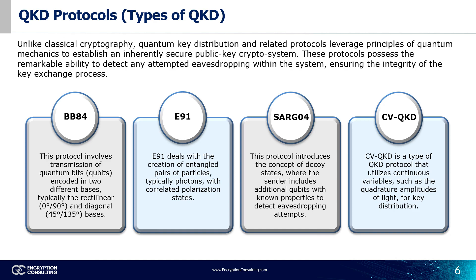Continuous Variable QKD, or CVQKD, is a type of QKD protocol that utilizes continuous variables — such as the quadrature amplitudes of light — for key distribution. Unlike discrete variable QKD protocols like BB84, CVQKD operates with continuous-valued quantum states, enabling higher key rates and longer transmission distances. It offers advantages for practical implementations, such as compatibility with existing fiber-optic infrastructure, and has the potential for integration with classical communication systems.